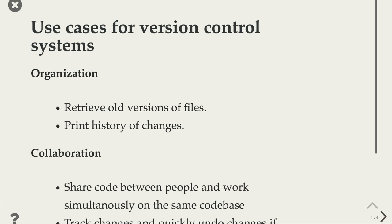Some of the things you might use this for: say you're an organization, maybe a class or a group of people, and you have some documents or software and you want to keep track of it over time. Maybe you've written a program, you know it works, you save that version, keep working on new features, and realize something doesn't work. Version control systems keep track of all the versions throughout history — every time you save a change, it's not replacing what was already there but saving a new version. That lets you see the version from last week or a month ago, retrieve old versions, and also see which changes are responsible for something not working.